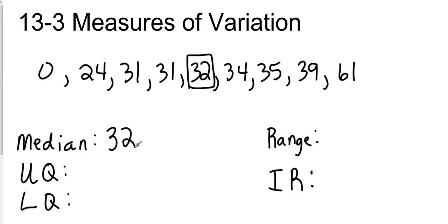Let's go ahead and find the range. Range is going to be highest number minus the lowest number. That's going to be 61 minus 0, which is 61. So those are the two easiest to find at this time.